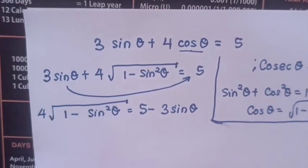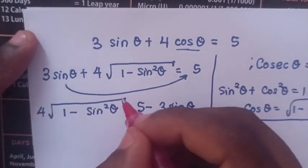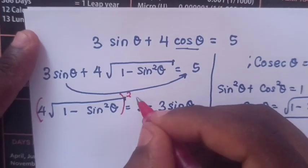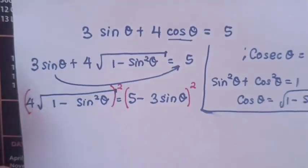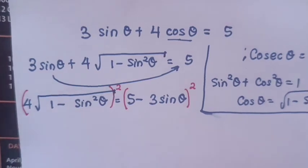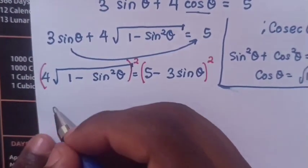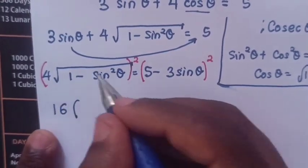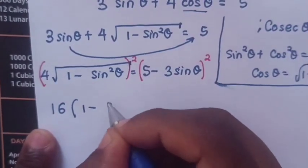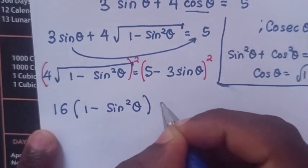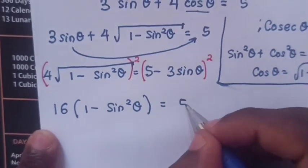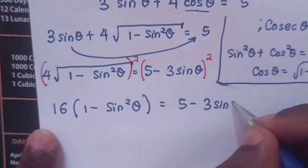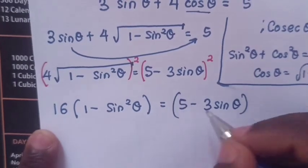Next, because there is a square root, we square both sides. So 4² times (1 − sin²θ) equals (5 − 3 sin θ)², which gives us 16(1 − sin²θ) = (5 − 3 sin θ)².